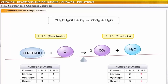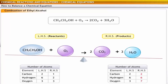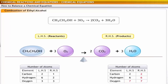Now, let's consider the next element, hydrogen. There are six atoms of hydrogen on the reactant side and two atoms on the product side. Now, as you can see, hydrogen has been balanced. The next element in the equation is oxygen. There are seven oxygen atoms on the product side but only three atoms on the reactant side. To balance the equation, place the coefficient 3 before oxygen on the left-hand side. In the end, do a final check to confirm that the number of atoms on the reactants and the product side is properly balanced. Here is what you get as the final equation: ethyl alcohol reacts with three molecules of oxygen to give two molecules of carbon dioxide and three molecules of water.